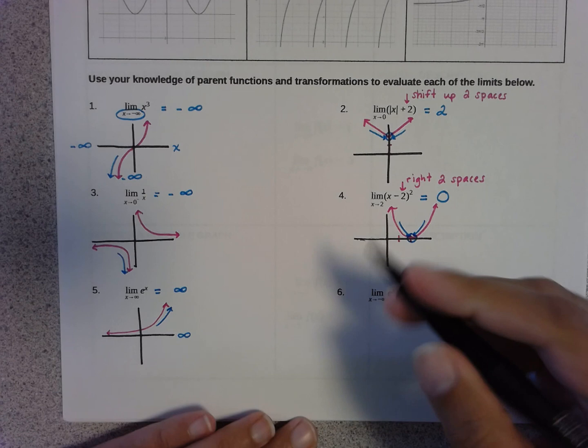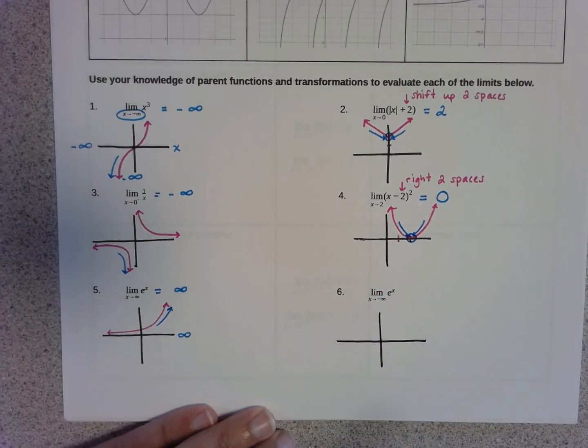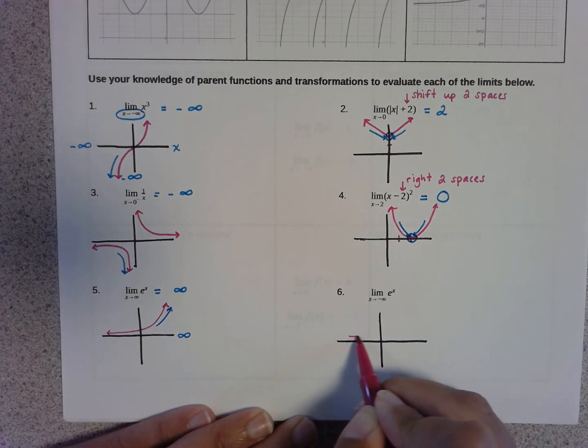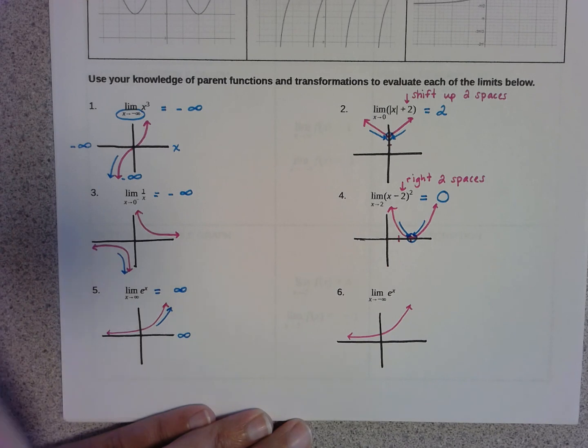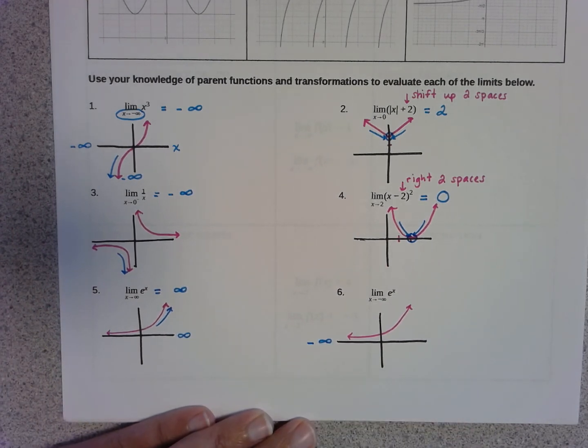For problem number six, we're finding the limit as x approaches negative infinity of the function e to the x. So same graph, only instead of going to the right as far as we can imagine, we're going to be going to the left, which is this way.